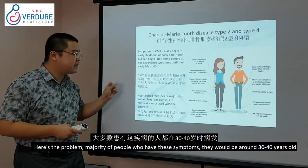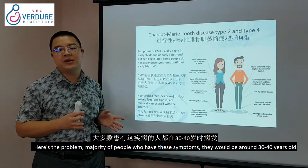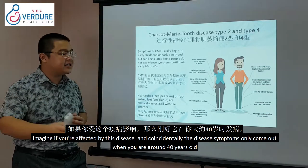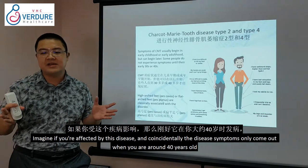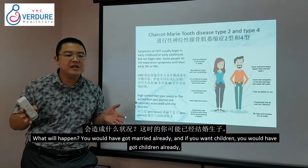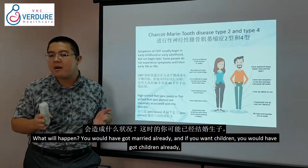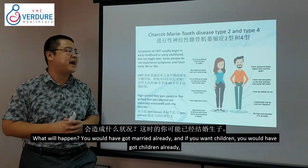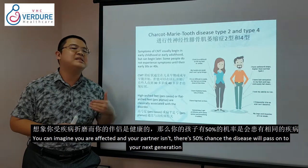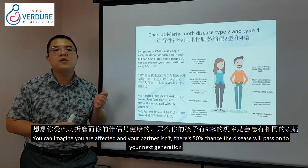Here's the problem: the majority of people with this disease will show symptoms around 30 to 40 years old. Imagine you are affected and this disease only shows symptoms at around 40 — by then you would likely already be married and have children. If you are affected and your partner isn't, there is a 50% chance of passing Charcot-Marie-Tooth disease type 2 and type 4 to your next generation.